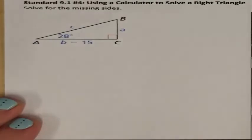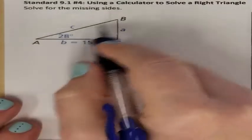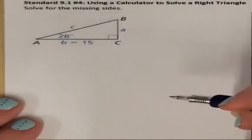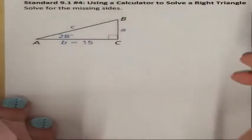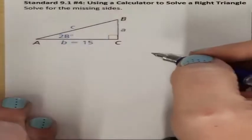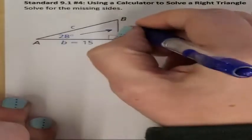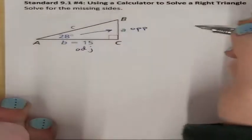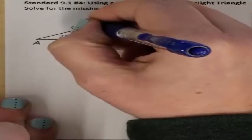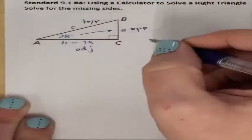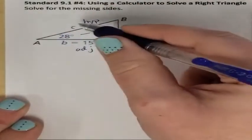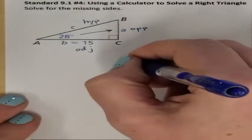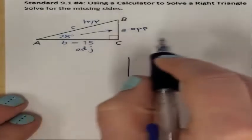We're asked to find the missing sides. This is not a special right triangle, so that table won't help us, which means we have to use the calculator. Setting it up the same way — I still have my 28 degrees. This over here is going to be my opposite. B is my adjacent, and diagonal from the 90 degrees is always our hypotenuse. We're asked to find both A and C, because both of those are missing. All we know is the adjacent B, so we need to split our paper into two sections because we have to solve for two variables.